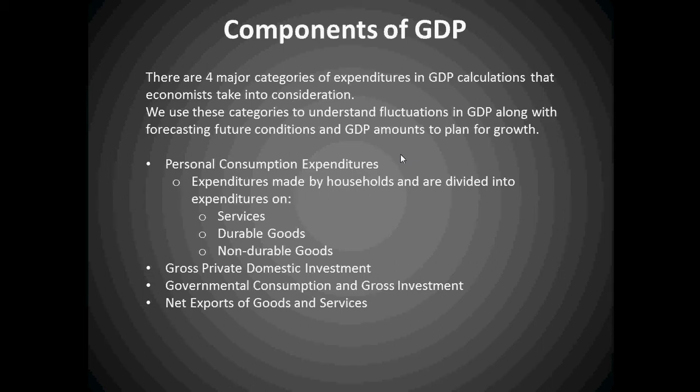The four major categories of expenditures would be personal consumption expenditures, gross private domestic investment, governmental consumption and gross investment, and net exports of goods and services. Personal consumption expenditures can be broken down into expenditures made by households and are divided into expenditures on services, durable goods, and non-durable goods.